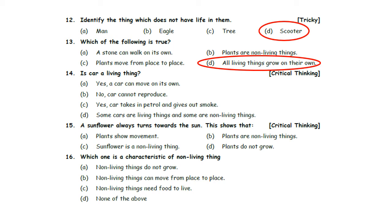Is a car a living thing? Option A: Yes, a car can move on its own. Option B: No, car cannot reproduce. Option C: Yes, car takes in petrol and gives out smoke. Option D: Some cars are living things and some are non-living things. Car is a non-living thing — it is a man-made thing, so it cannot move by its own, and also it cannot feel or reproduce. So, Option B — No, car cannot reproduce — is the correct answer.